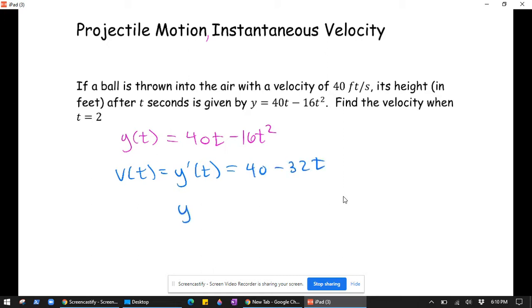And y prime of 2, therefore, would be 40 minus 32 times 2, which is 40 minus 64 or negative 24. And the units would be feet per second.